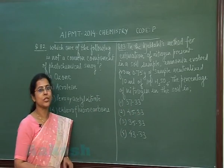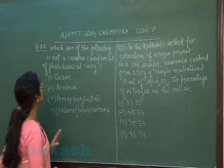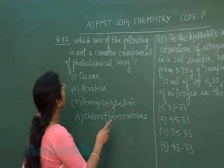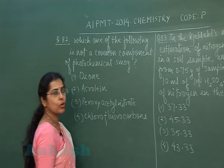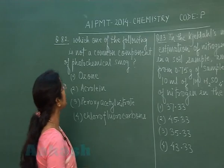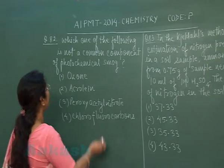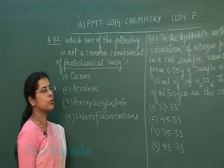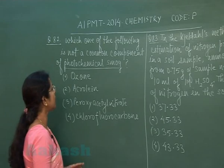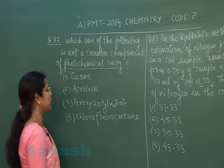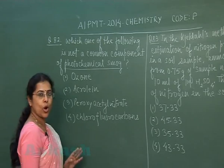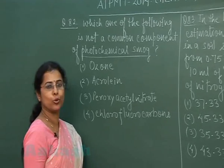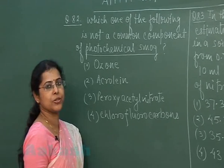Our next question is question number 82. Which one of the following is not a common component of photochemical smog? The options given are ozone, acrolein, peroxyacetyl nitrate, and chlorofluorocarbons.